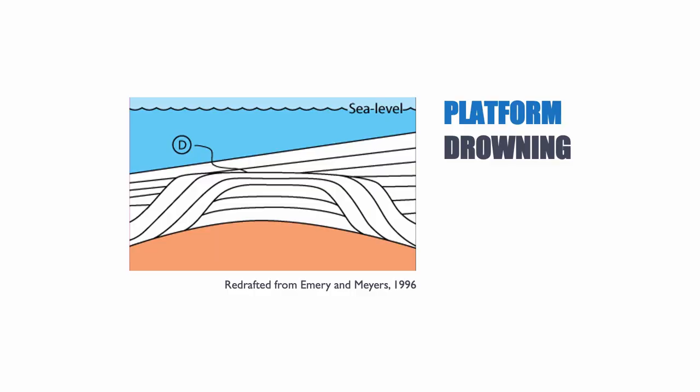The next generation will be even deeper, and so on, until the carbonate platforms are drowned — they're dead, there is no more production. On top of this, as suggested on this diagram, you could have clastics that prograde over it, or it could just stay like this. This is a situation that does happen in carbonates.